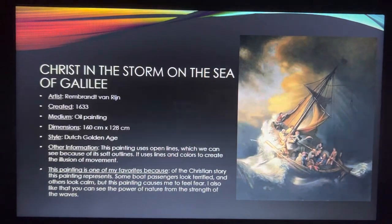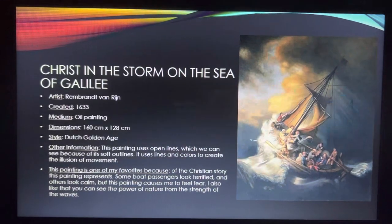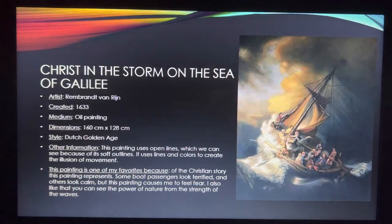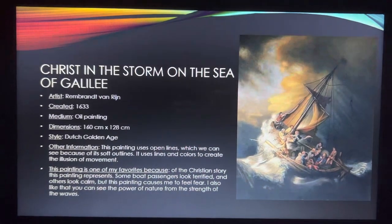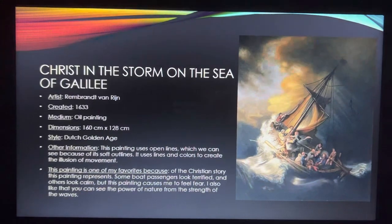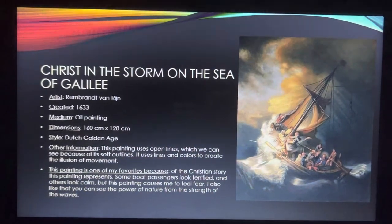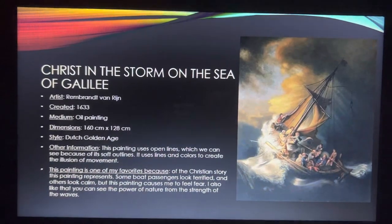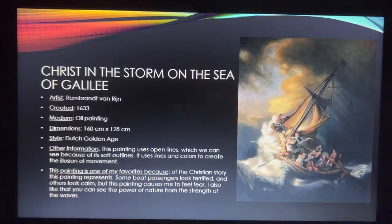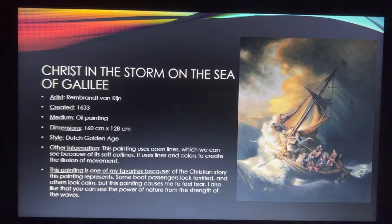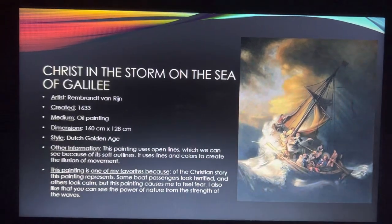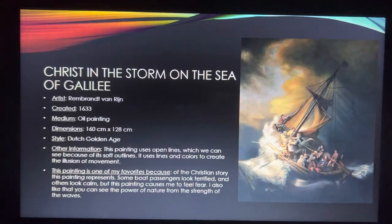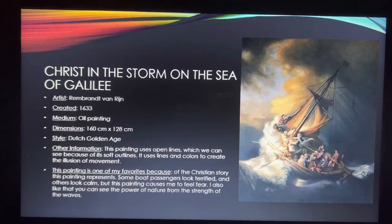This is the next painting, which is Christ in the Storm on the Sea of Galilee by Rembrandt van Rijn. This painting was created in 1633 with an oil paint media. The dimensions are 160 centimeters by 128 centimeters using the Dutch Golden Age style. This painting uses open lines, which we can see because of its soft outlines especially on the waves. It uses lines in color to create the illusion of movement.